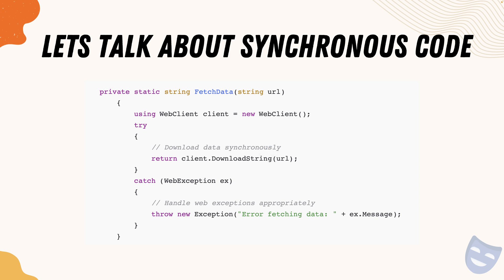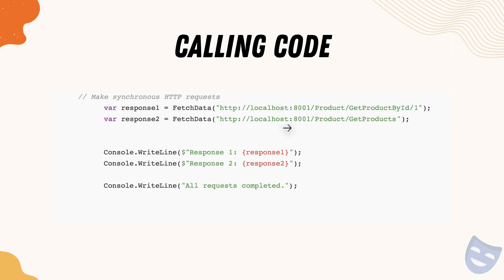Let's talk about synchronous code first. As mentioned, the WebClient example shows a FetchData method that performs a web client call to download a URL and get the value from it. This is completely synchronous code — there is no async keyword and no await keyword. When we call this FetchData method we have two call operations, and then we write the responses with Console.WriteLine. This gives us the response from response one and response two.